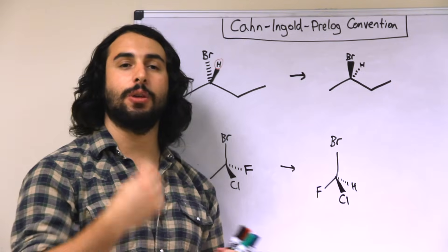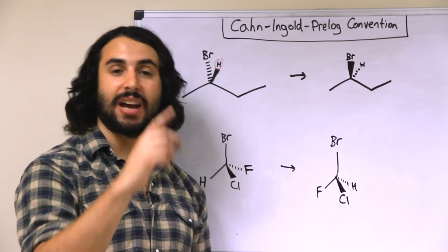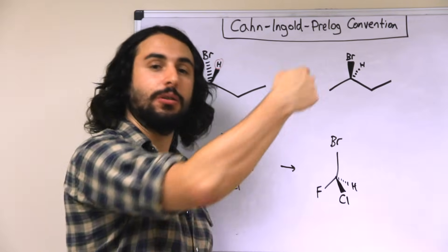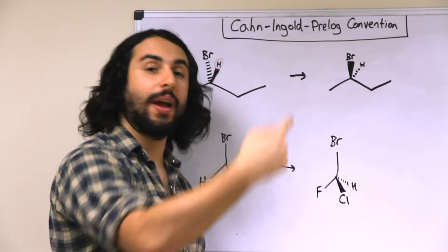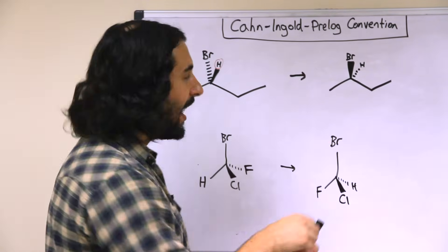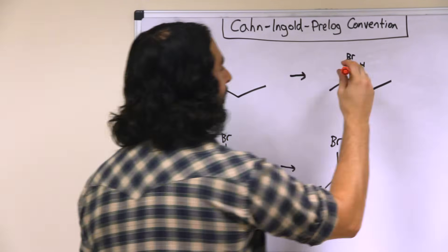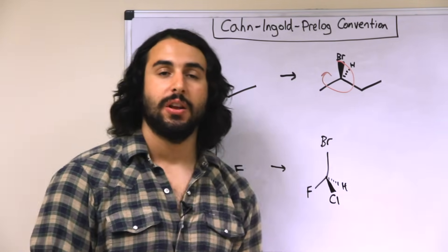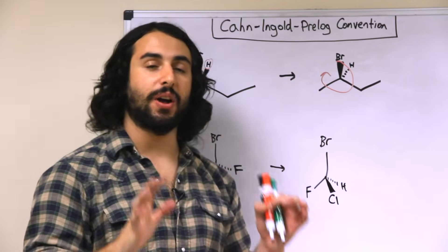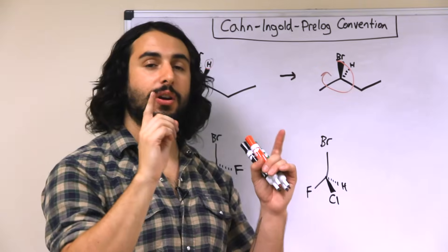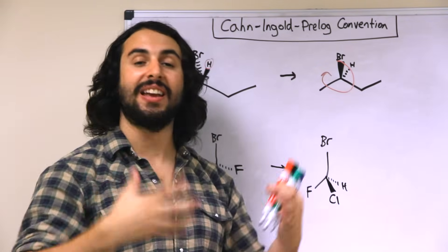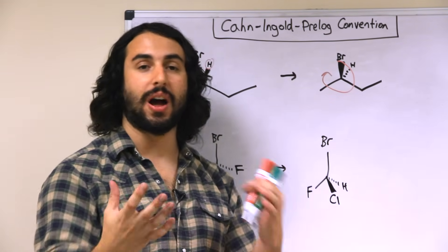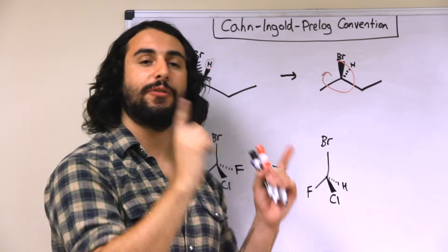What we're doing is saying: if I switch the bromine and the hydrogen, it will be easier to assign the absolute configuration because now I can just look at it the way we're looking at the board right now, and we can trace the circle — that looks like R.